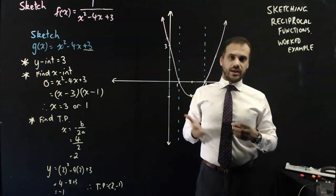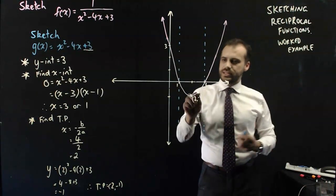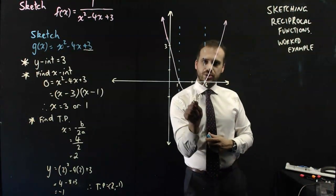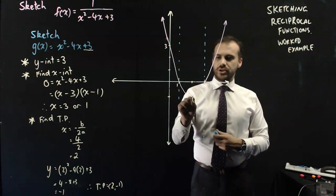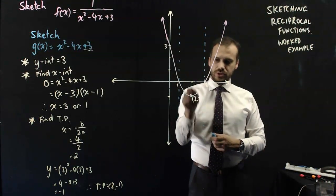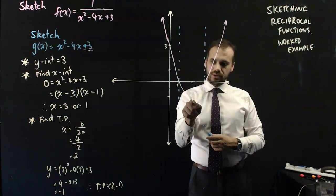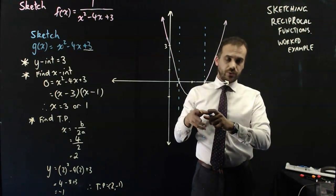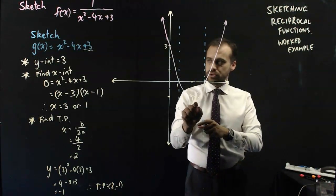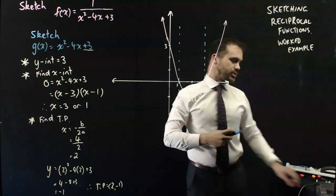but obviously I can find where that turning point is by subbing in 2. Because I know that the turning point happens at x equals 2. It happens in line with this turning point. I just don't know what the y-coordinate is. So I'm going to sub 2 into this equation.